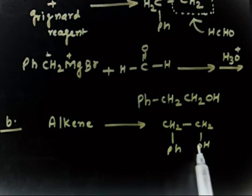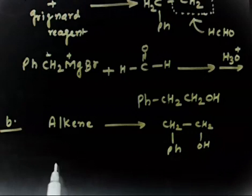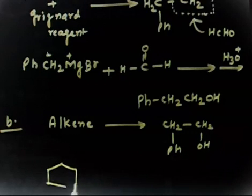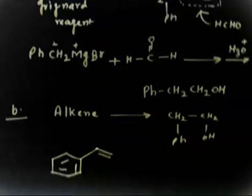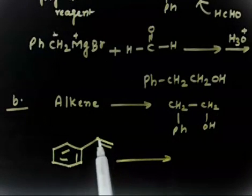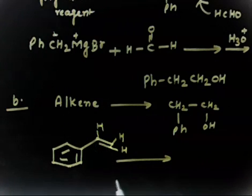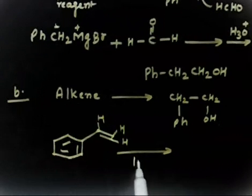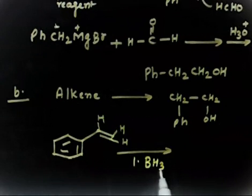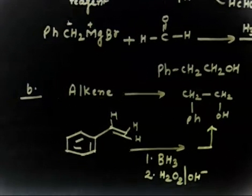You will add HOH. If you remove HOH from the product, you get Ph-CH=CH₂. So you have to take the alkene Ph-CH=CH₂ and add HOH. You need to add OH to the less substituted carbon — that is anti-Markovnikov. So you do hydroboration-oxidation: BH₃ then H₂O₂/OH⁻. This reaction gives you the desired product, as hydroboration-oxidation is anti-Markovnikov.